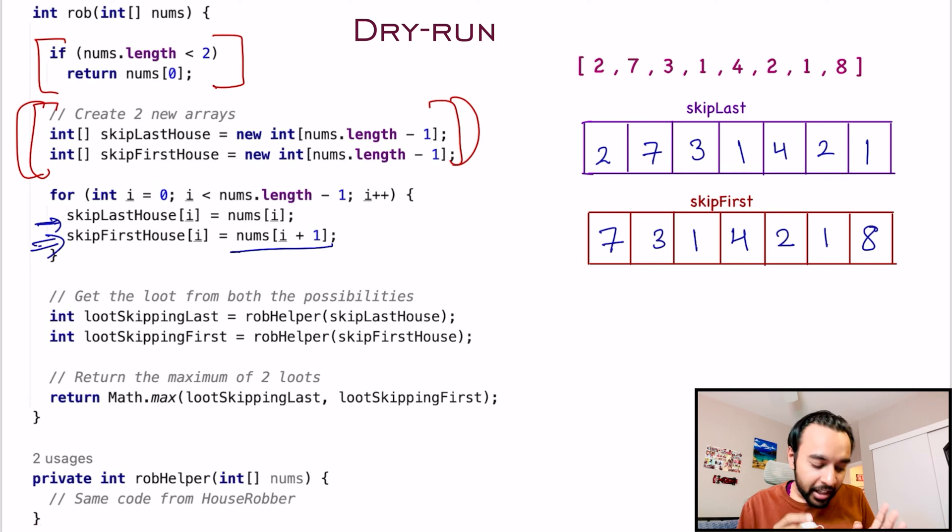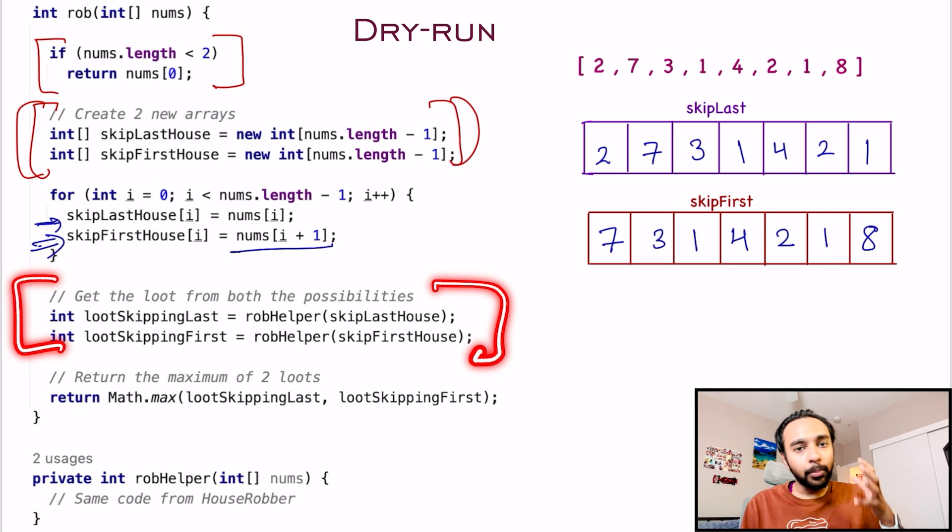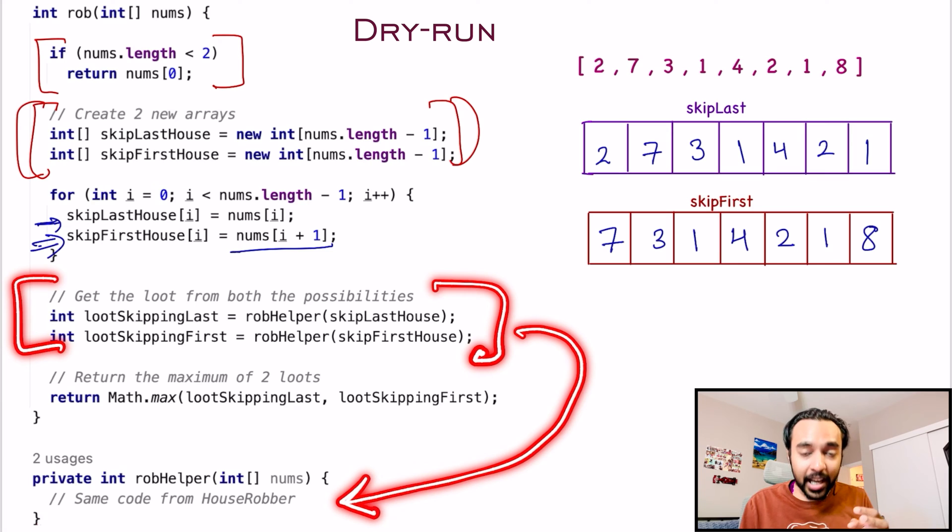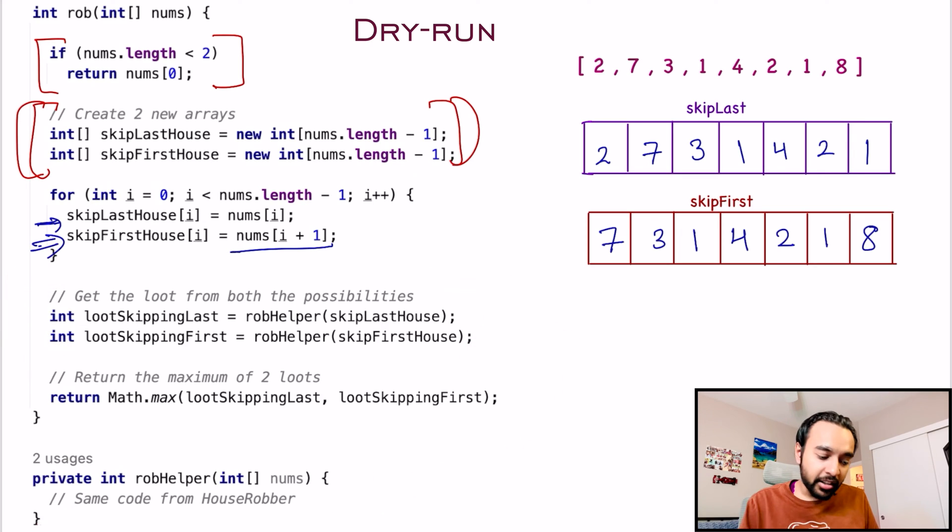The next step is very simple. What you are going to do is, you will look at robbing both the possibilities. And to rob them, you will take help of the exact same code that is for house robber 1. Once you get the values, you will get two values. One is x and one is y. And then, your answer would be the maximum of both of these values. And that is written in this last step.